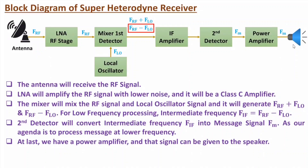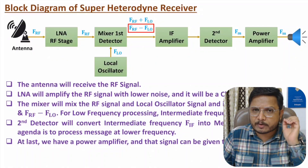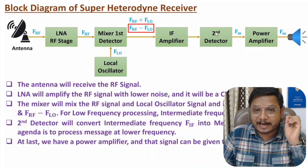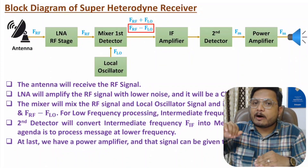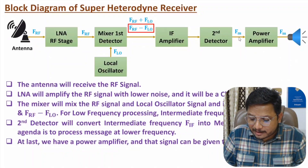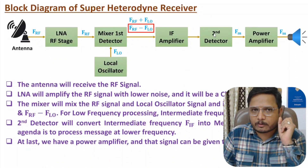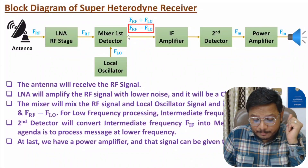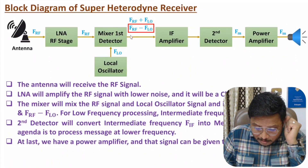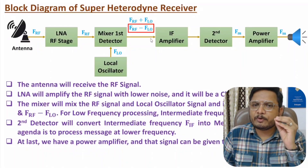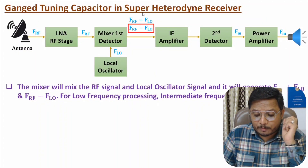So one thing one can easily understand: we do signal transmission at high frequency — at the antenna side we have high frequency. After that, we have the first detector and then the second detector, so at two stages we are doing frequency conversion. At the output side, we need low frequency, and processing there is cost effective. So we do frequency conversion two times. The first mixer generates the intermediate frequency, and the second detector generates the message signal frequency. Now let me explain the ganged tuning capacitor in the super heterodyne receiver.